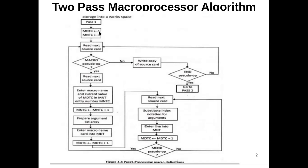As the first step, we have to initialize the counter values to one. The two counters used in this pass are the macro definition table counter (MDTC) and the macro name table counter (MNTC). MDTC points to the next available entry in the macro definition table (MDT), and MNTC points to the next available entry in the macro name table. So to get the next entries from MDT and MNT, we use the MDTC and MNTC counters respectively.